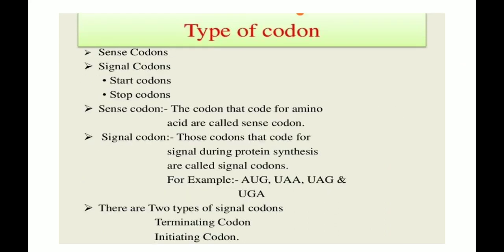What are the types of codons? First, the codon that codes for an amino acid is called a sense codon. Signal codons are those codons used as signals during protein synthesis. The signal codons include AUG, UAA, UAG, and UGA — that is, adenine-uracil-guanine, and uracil-adenine-guanine combinations.